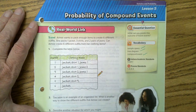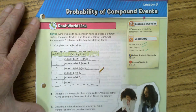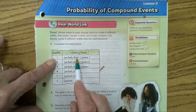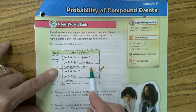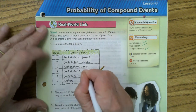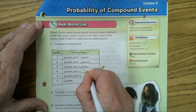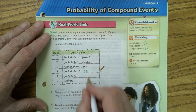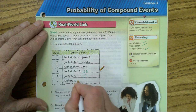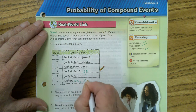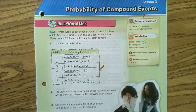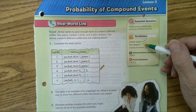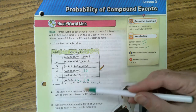Amy wants to pack enough items to create six different outfits. She packs one jacket, three shirts, and two pairs of jeans — can Amy create six different outfits? You complete the chart: jacket/shirt one/jeans one, jacket/shirt one/jeans two, jacket/shirt two/jeans one, jacket/shirt two/jeans two, jacket/shirt three/jeans one, jacket/shirt three/jeans two. We're going to learn how to do these patterns with a tree diagram and how to create a sample space.